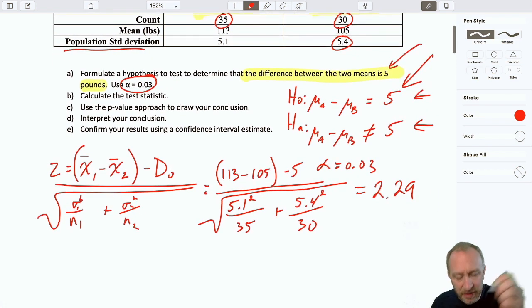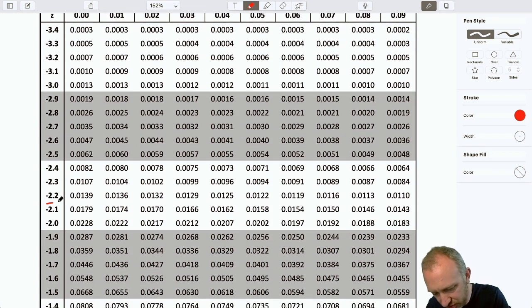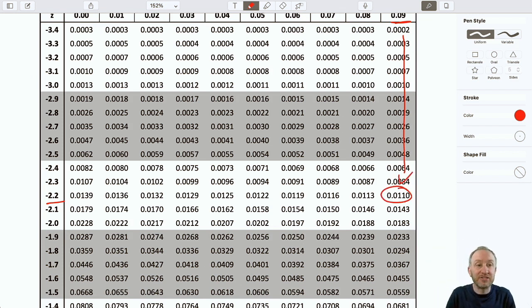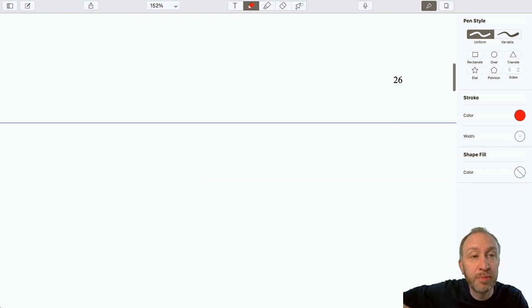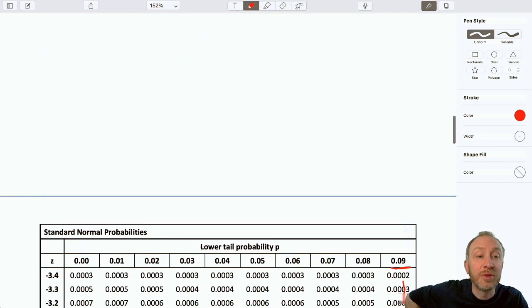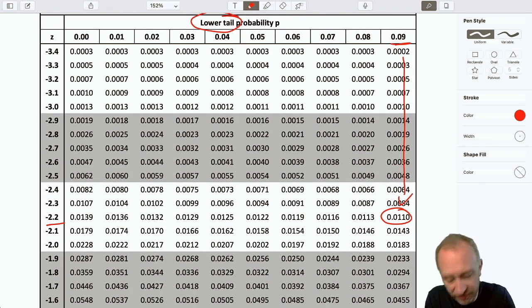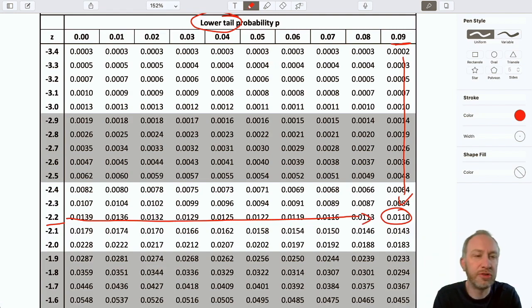So here we've got our test statistic. Now we want our p-value. So I come down to our tables. I'm looking for 2.29. And yes, I am using the negative side. Because the distribution is perfectly symmetric. What I want is the area in the upper tail from positive 2.29. But that's exactly equal to the area in the lower tail. To the left of negative 2.29.